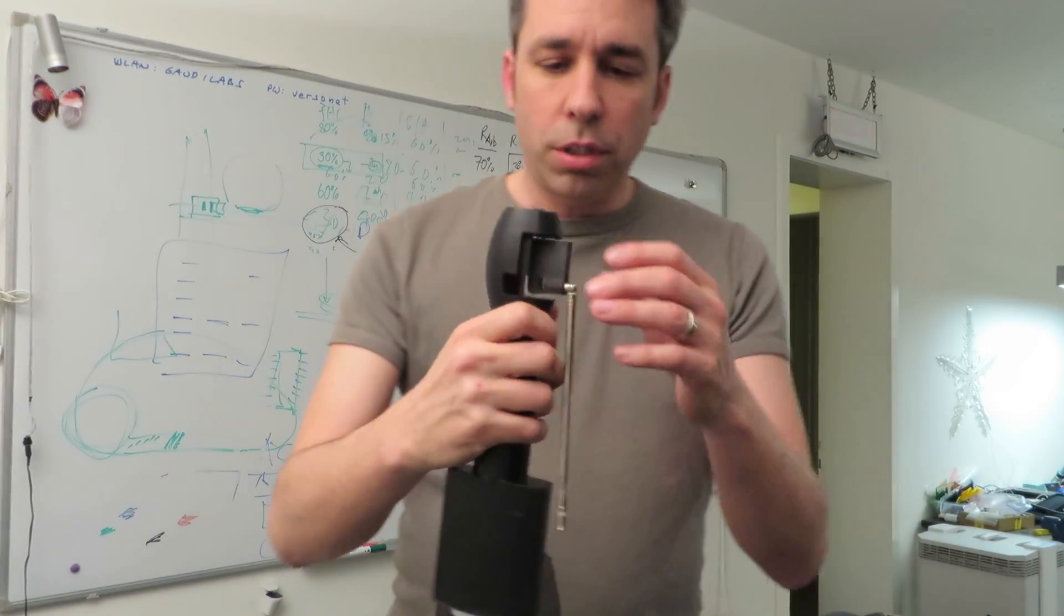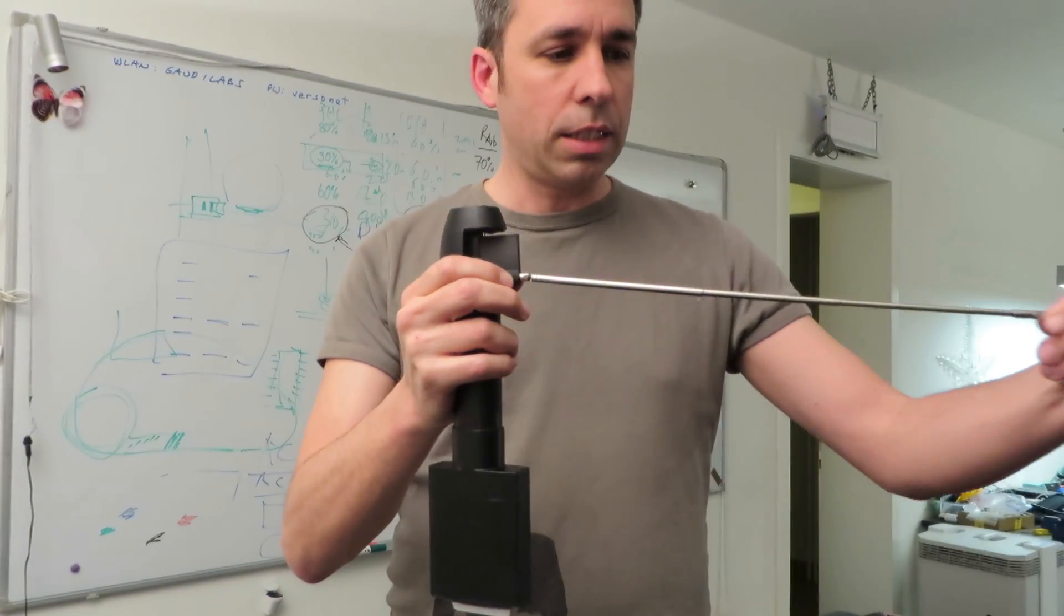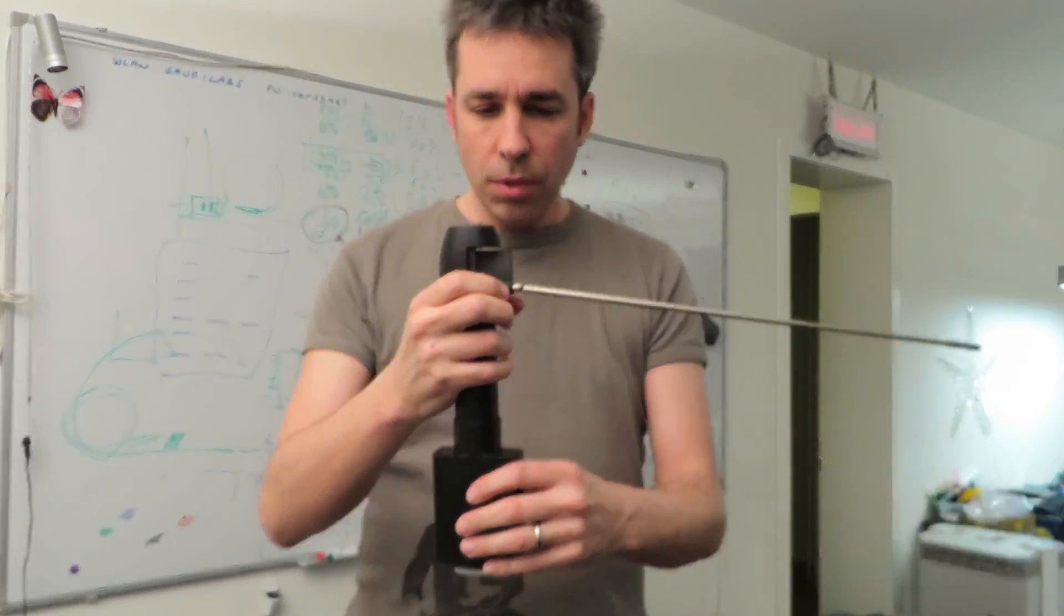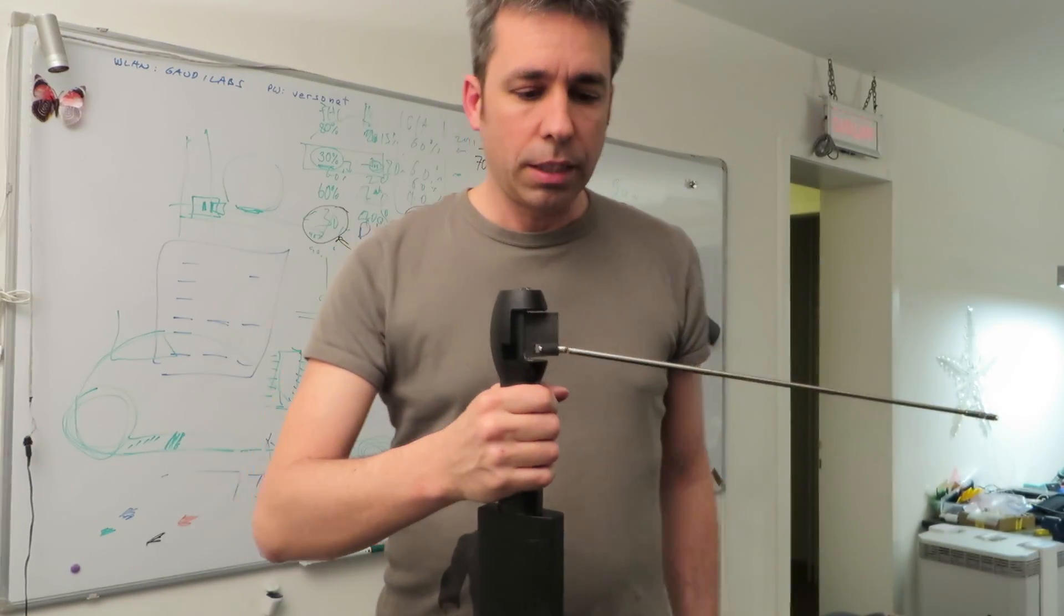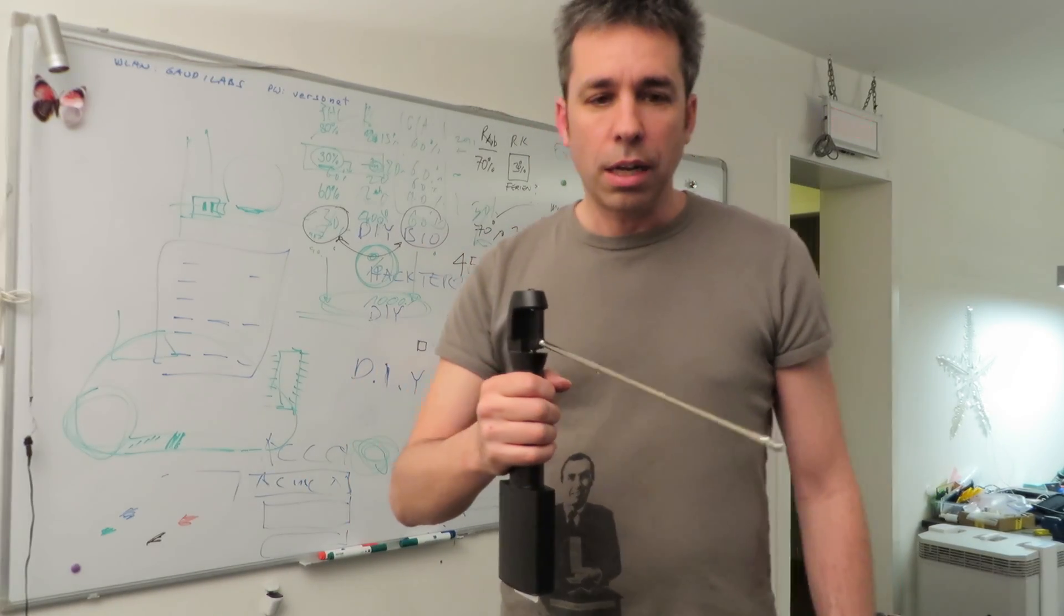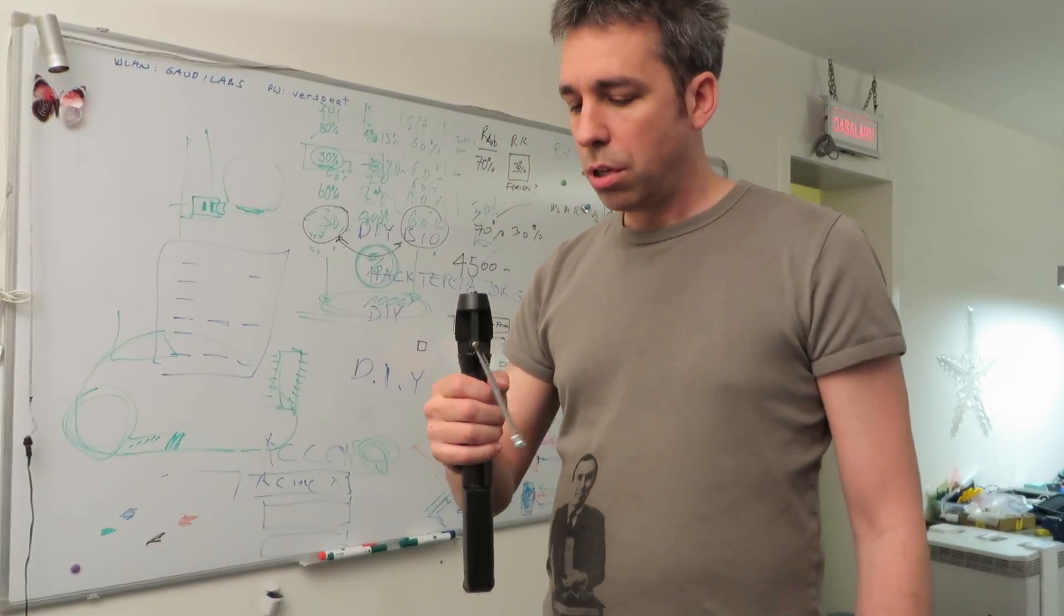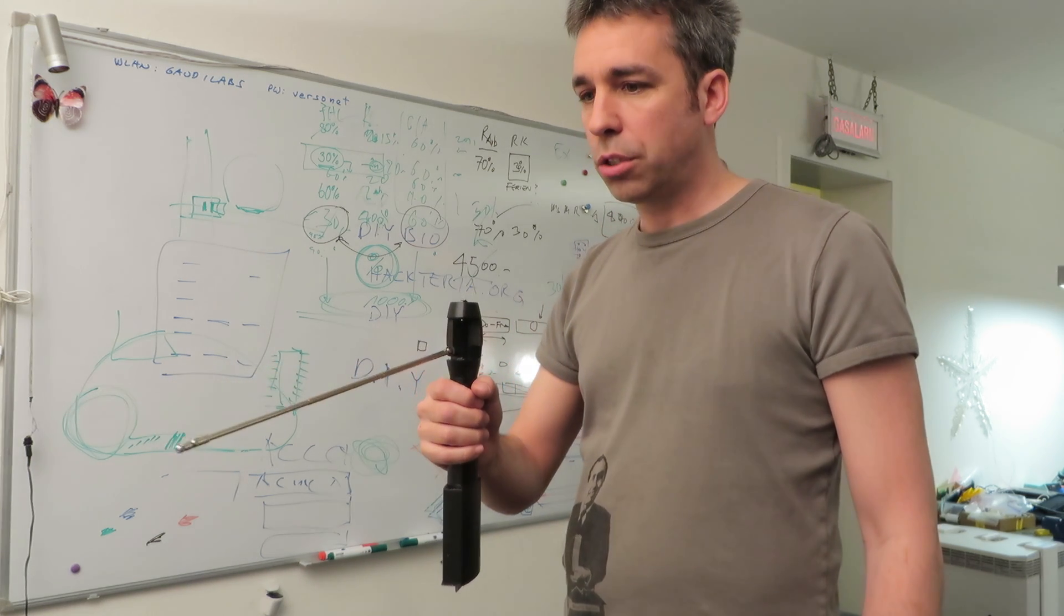And now we've got this antenna part where you have to first extend the antenna and then you hold the device like this and you see already it starts moving. So the antenna is now going to move towards where you can find the tardigrade.